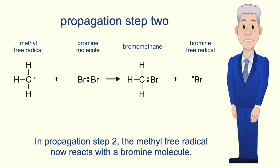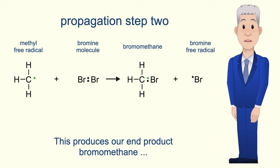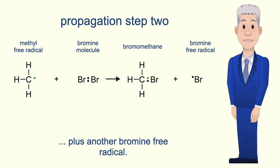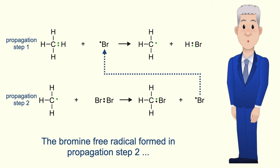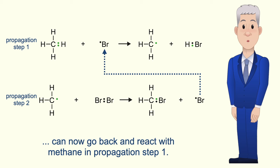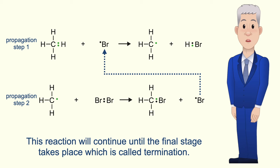In propagation step 2, the methyl free radical now reacts with a bromine molecule. This produces our end product bromomethane plus another bromine free radical. If we look at propagation steps 1 and 2 together we can see that they form a chain reaction. The bromine free radical formed in propagation step 2 can now go back and react with methane in propagation step 1. So this reaction will continue until the final stage takes place, which is called termination.